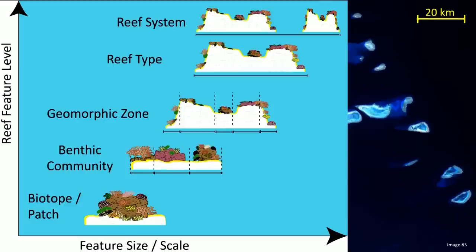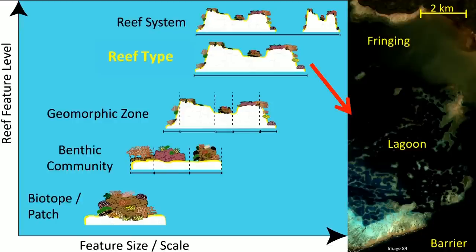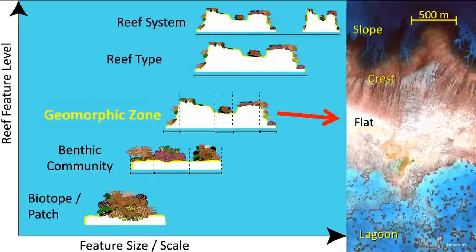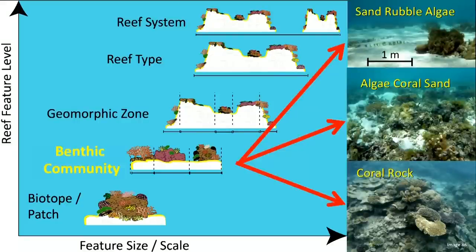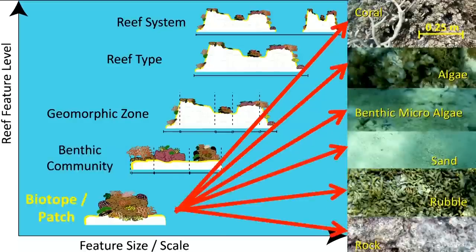When looking at coral reef systems, you can examine different reef feature levels, and each feature level contains different feature sizes and scales. The top level is the reef system, made up of several coral reefs. Each reef can be characterized as a fringing reef, a lagoon reef, or a barrier reef. Within each reef type you can look at different zonations: the reef slope, reef crest, reef flat, and lagoon. Each zone is built up of different benthic communities, which could be combinations of sand, rubble, and algae. The last level is the biotope or patch, which describes the highest level of detail.